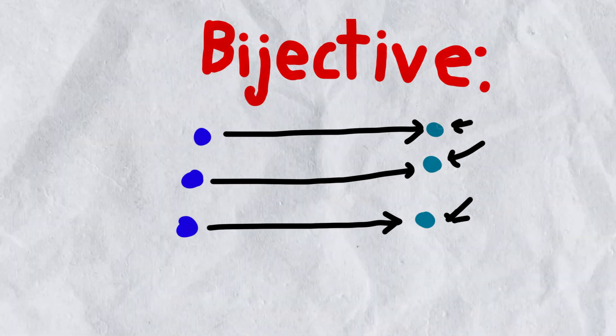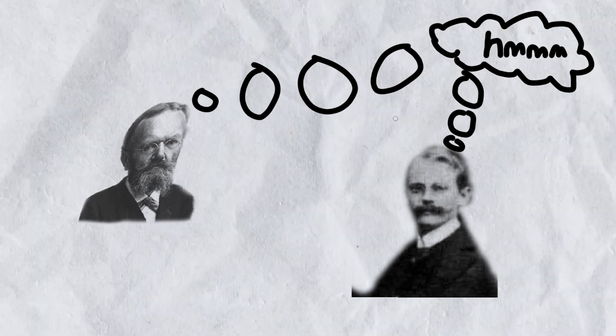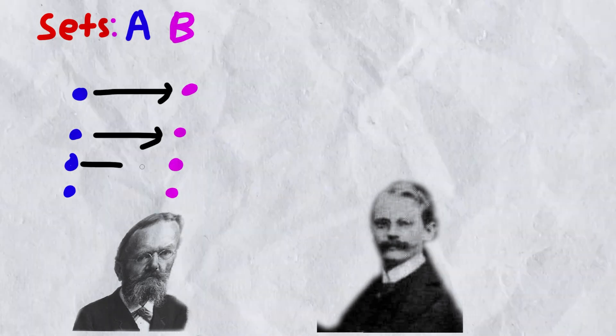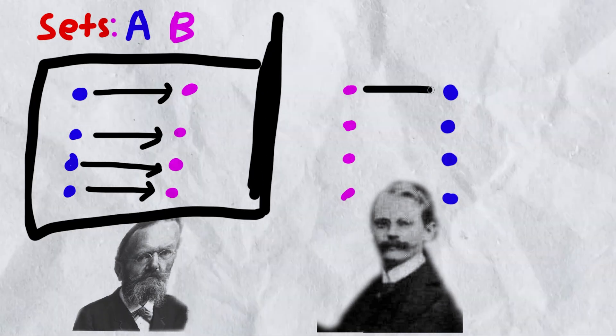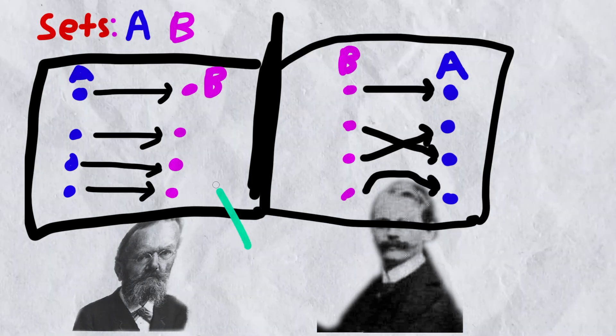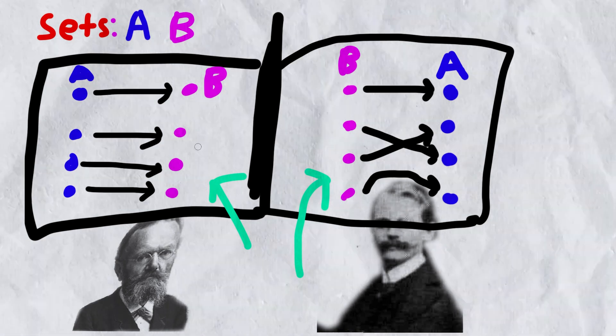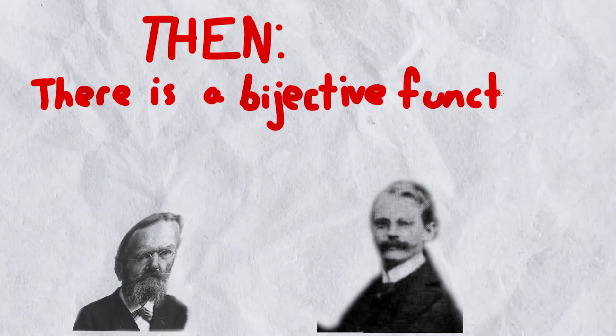Now we're caught up to speed. Let's get into the Schroeder-Bernstein Theorem — an absolute classic. What Schroeder and Bernstein were pondering at the turn of the 20th century was infinite sets. So if A and B are sets and there exists an injective function from A to B, as well as an injective function from B to A — we have a function from A to B that's injective and a function from B to A that's injective.